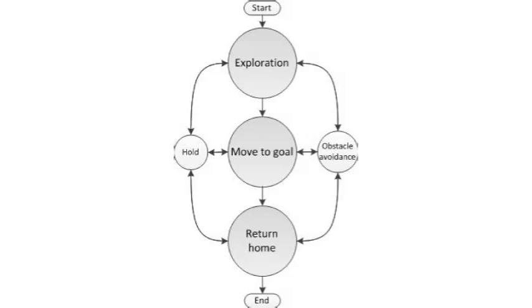First, the quadrotor explores the room. Once complete, it moves to a predefined goal point and then returns home. It should always avoid obstacles and stop if necessary to prevent collision with a dynamic object.